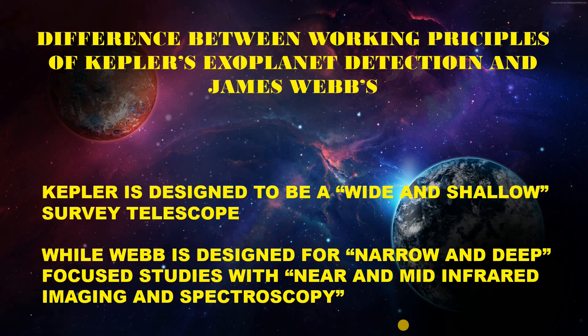Kepler seeks to answer these questions by staring at a small region of sky containing more than one lakh stars for 3.5 years, and thus determining what fraction of stars have terrestrial planets. In answering this question, Kepler has generated data on confirmed transiting planets along with some basic properties and the composition of their atmospheres.